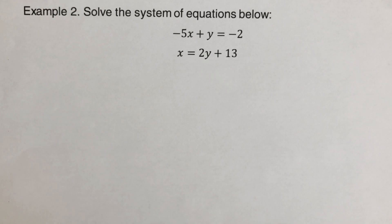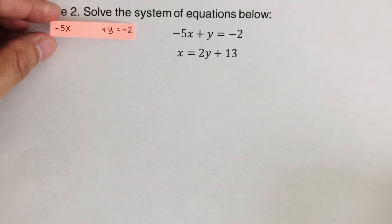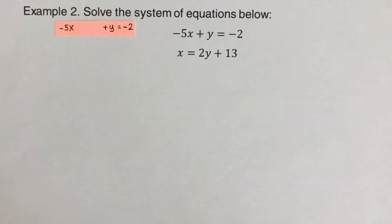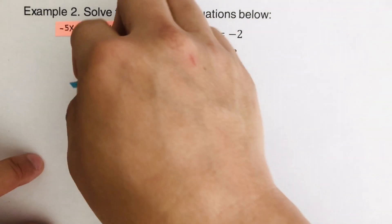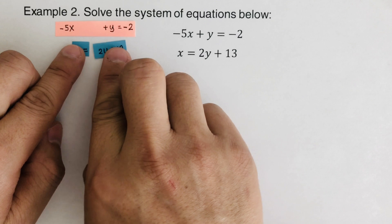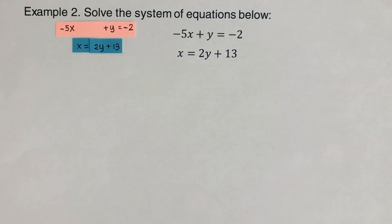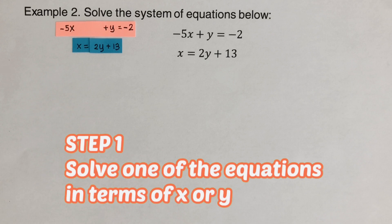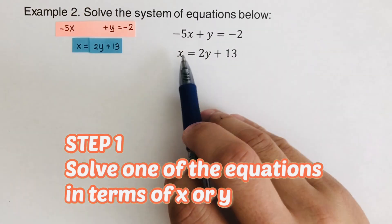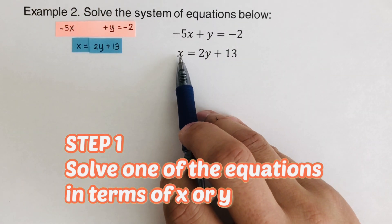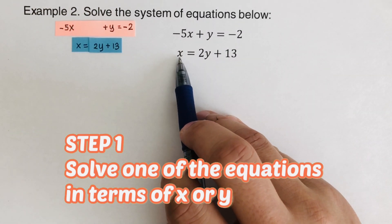So we go over this problem here. I created a card for each of these equations. The first card is negative 5x plus y equals negative 2, and the other card is x equals 2y plus 13. Again, the first step is to solve one of the equations in terms of x or y. Looking at this equation, we already have x isolated by itself. So we're done with the first step.